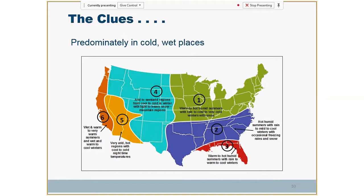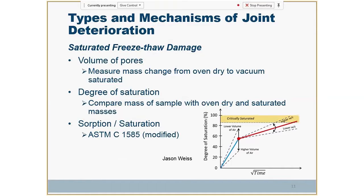As we've looked at this, we've realized that predominantly most of this deterioration is occurring in cold regions where we have a lot of freeze-thaw cycles — the upper Midwest on out towards the East Coast. The types and mechanisms we've been looking at: certainly saturated freeze-thaw damage — we feel that's definitely one of the conditions going on. We've had some great professors working with us on that: Jason Weiss out of Oregon State, Tyler Layout at Oklahoma State, Larry Sutter up at Michigan Tech, and we've also been working with Tom Van Dam.